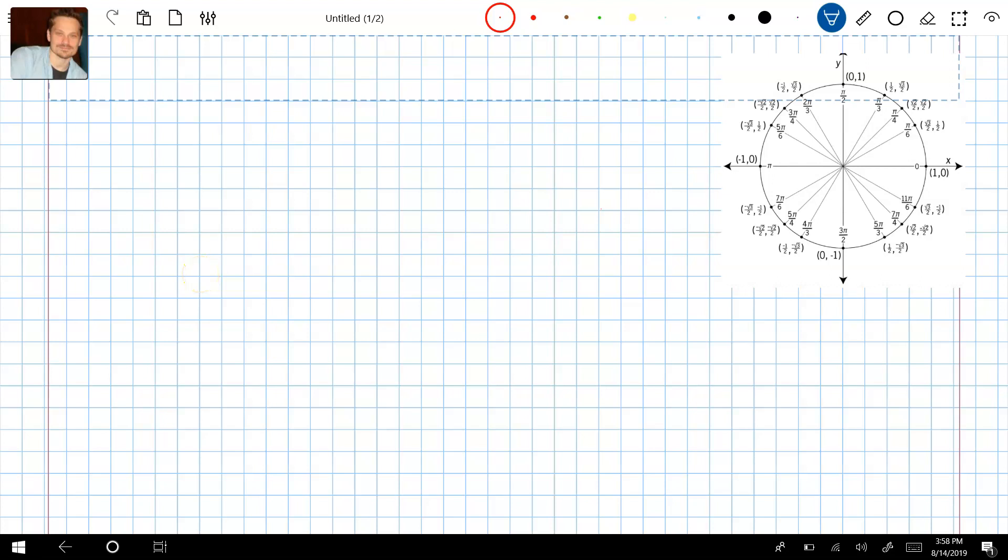Hi everybody, I want to take a look at solving a tricky equation that requires using an identity to be solved. So I'm going to have sin(2θ) - sin(θ) = 0.